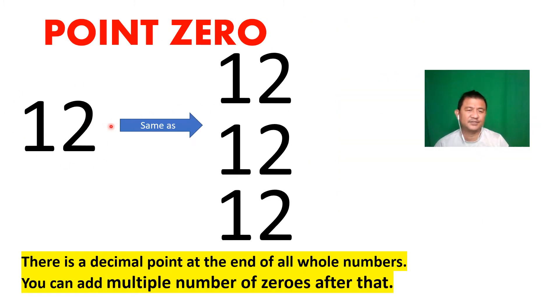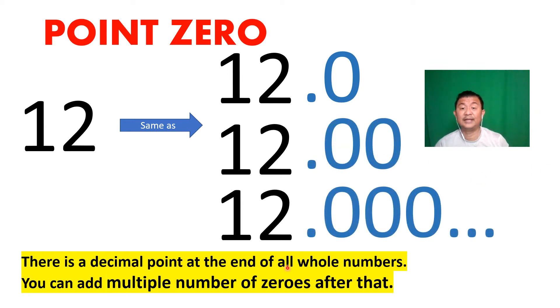Twelve is a simple number, but there are tons of symbols hidden after 12 as a whole number. Check this out: put a decimal point and add a zero. 12.0, it's the same. I can add two zeros. Actually, you can add as much zeros as you can after the decimal point. It doesn't matter because they all mean 12.